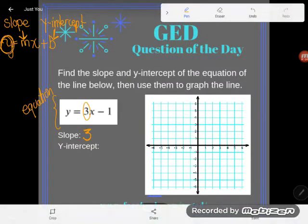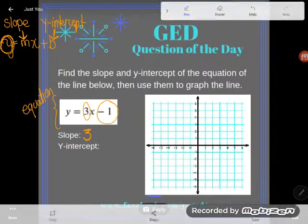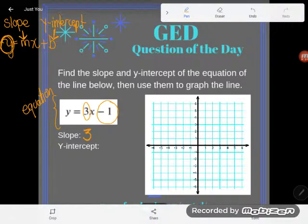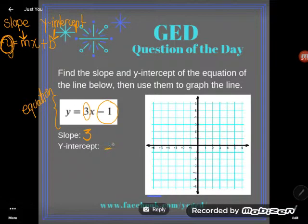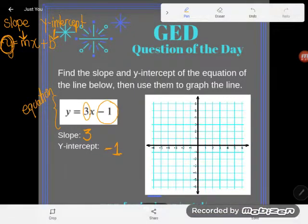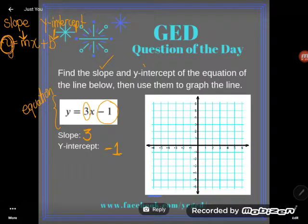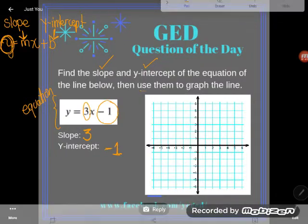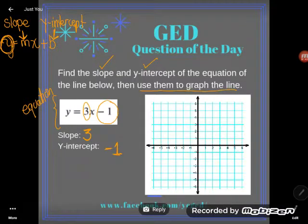And I can also see that number adding or in this case subtracting with y. And so keep the sign with it. The y-intercept is going to be at negative 1. Great. Now I did the first two things they asked me to do. I found the slope. I found the y-intercept. But now they want me to use them to graph the line.